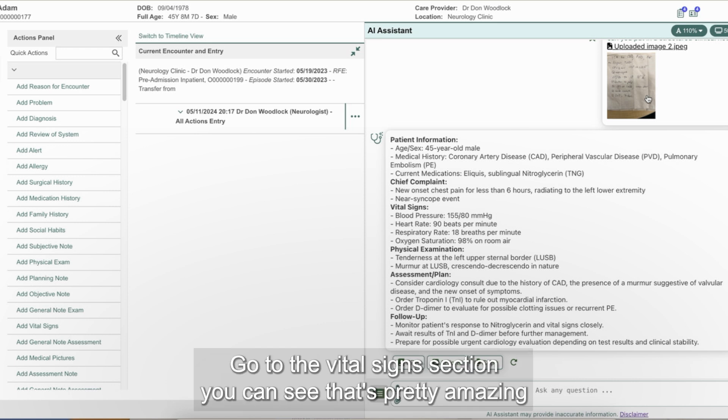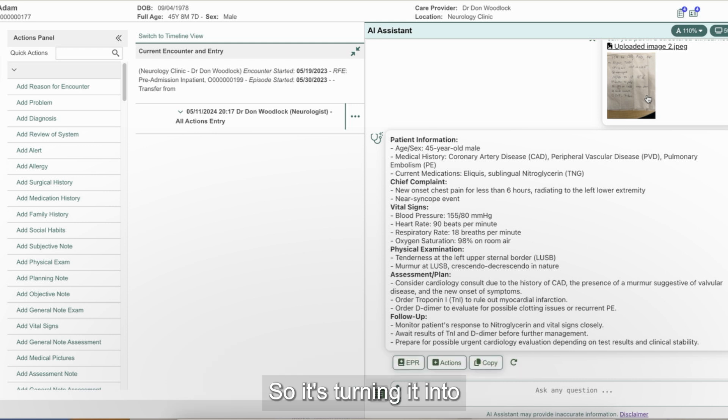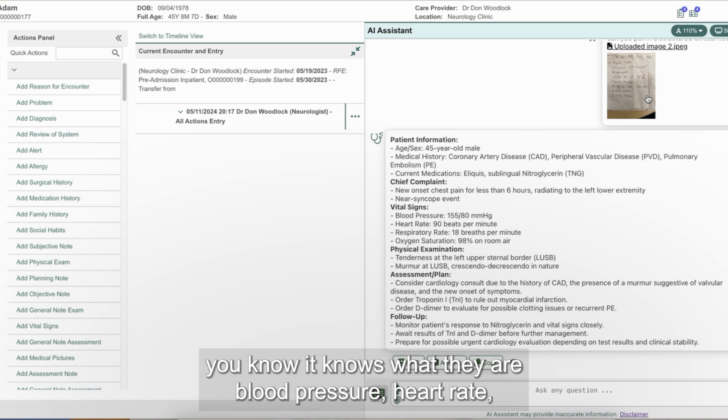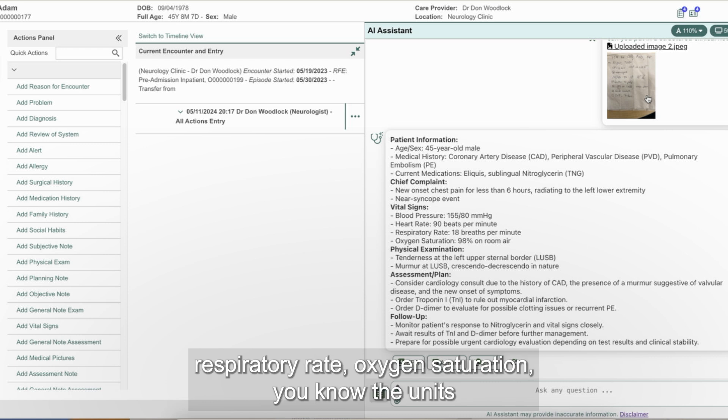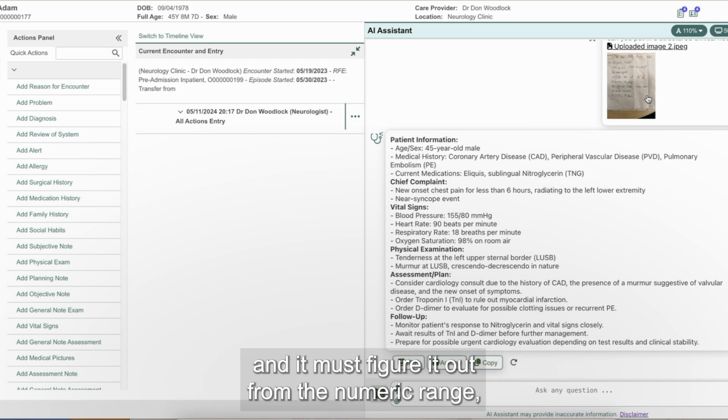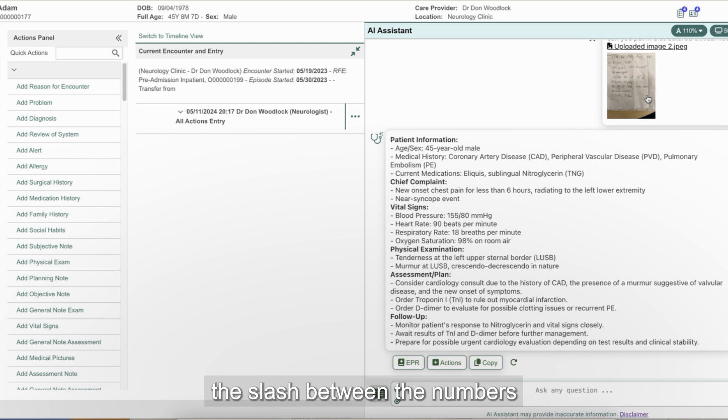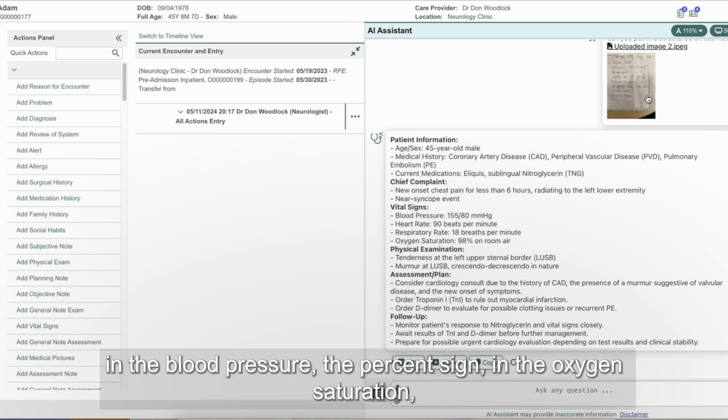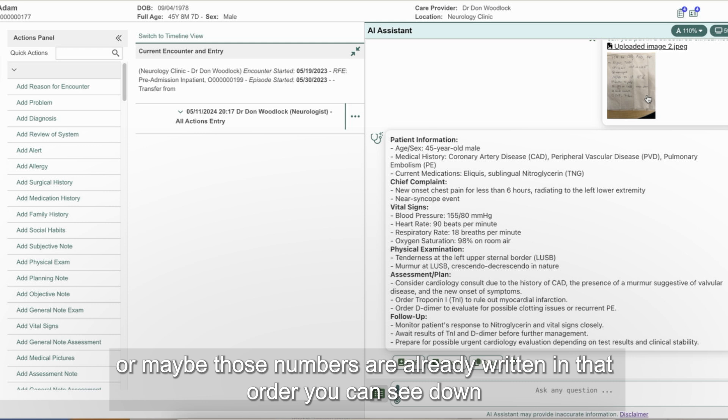Go to the vital signs section. You can see that's pretty amazing. That was that row of numbers. So it's turning it into, it knows what they are, blood pressure, heart rate, respiratory rate, oxygen saturation, the units. And it must figure it out from the numeric range, the slash between the numbers and the blood pressure, the percent sign and the oxygen saturation, or maybe those numbers are already written in that order.